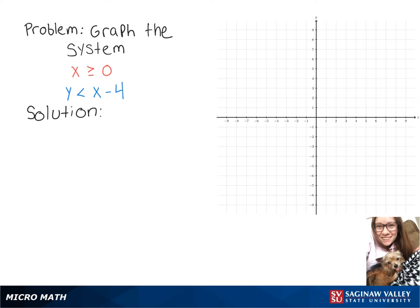We'll graph that just as you would the line x equals 0, and it'll be a solid line since it's greater than or equal to, and then because it's greater than, we're going to shade everything to the right of that.